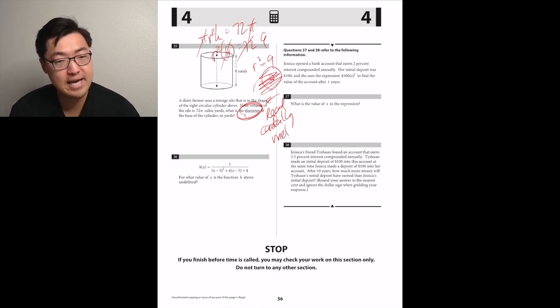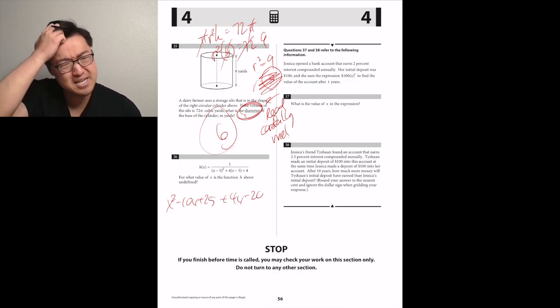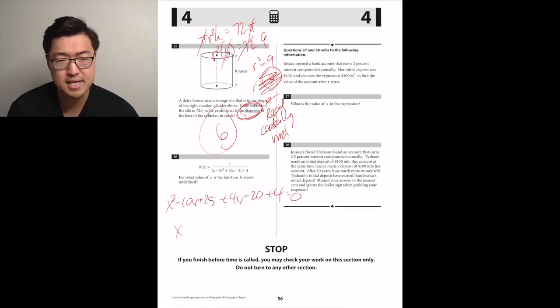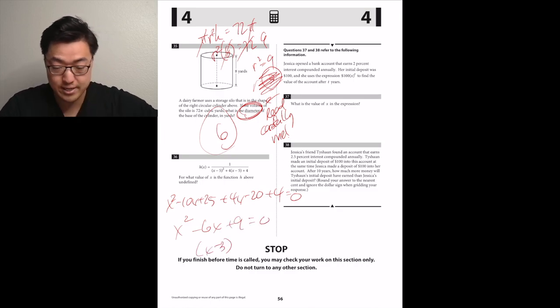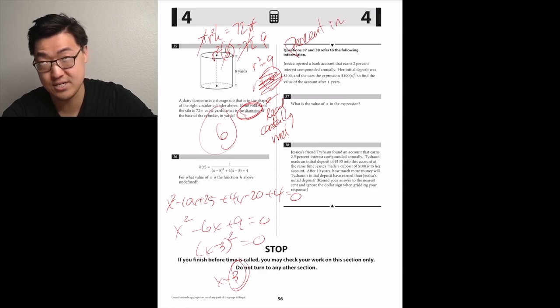Number 36. For what value of x is the function h above undefined? Undefined means that you're dividing by zero. So that denominator would have to equal zero. Let's set it equal to zero and then see what value would make it equal zero. So then you have to expand it. x squared minus 10x plus 25 plus 4x minus 20 plus 4 is equal to zero. So then we have to solve for that. You get x squared minus 6x plus 9 is equal to zero. That factors into x minus 3 squared equals zero. So x is 3.